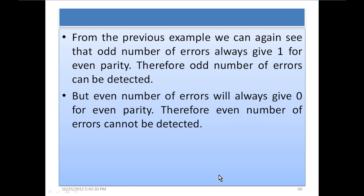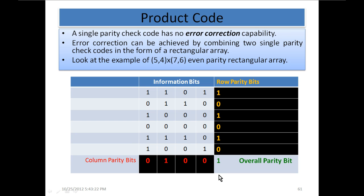From the previous example, we can see that an odd number of errors always gives S = 1 for even parity; therefore, odd numbers of errors can be detected. But an even number of errors will always give S = 0 for even parity; therefore, even numbers of errors cannot be detected. This single parity check code belongs to the channel coding method which we call error detection and retransmission, because after detecting the error, only retransmission is possible.